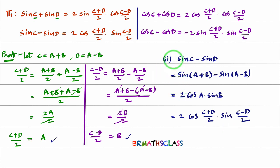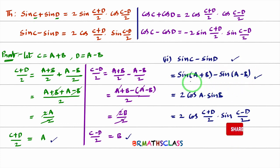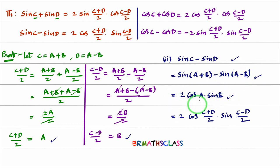Now we will prove the second result: sin C − sin D. With C as A+B and D as A−B, this becomes sin(A+B) − sin(A−B). The formula for sin(A+B) − sin(A−B) is 2 cos A sin B. Substituting A = (C+D)/2 and B = (C−D)/2, we get sin C − sin D = 2 cos((C+D)/2) · sin((C−D)/2).